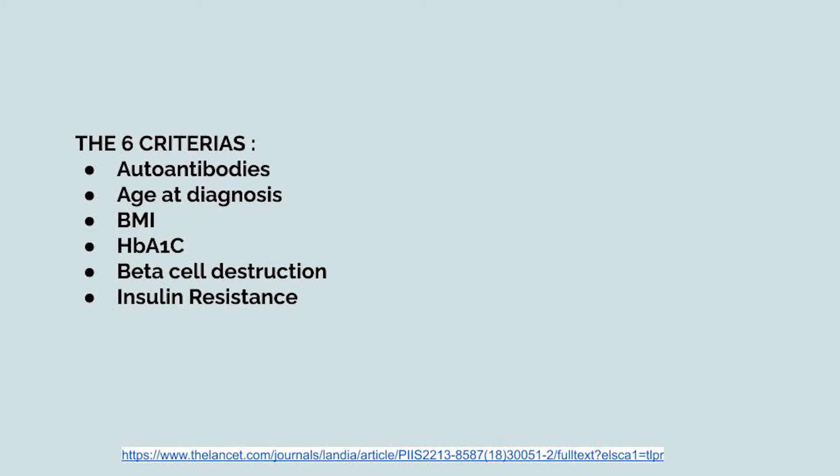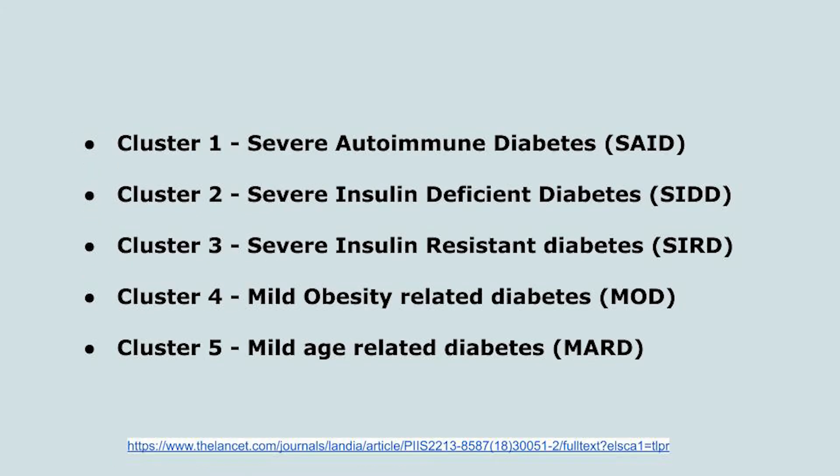The variables used are: the presence of antibodies in the body, age at diagnosis, BMI, HbA1c, beta cell function, and insulin resistance. The five clusters identified are: severe autoimmune diabetes, severe insulin deficient diabetes, severe insulin resistant diabetes, mild obesity related diabetes, and mild age related diabetes.